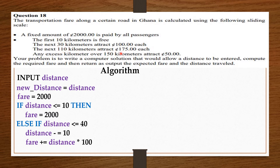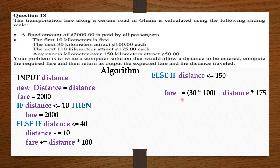The next 110 kilometers attracts 175 cedis each, meaning if the distance is less than or equal to 150 kilometers — which is 110 plus 40 — the passenger is going to pay the fixed amount plus the full amount for covering the next 30 kilometers, plus the distance traveled within the 110 kilometers times 175 cedis. To get the distance traveled within those 110 kilometers, we subtract the total previous distance covered from the distance covered by the passenger.